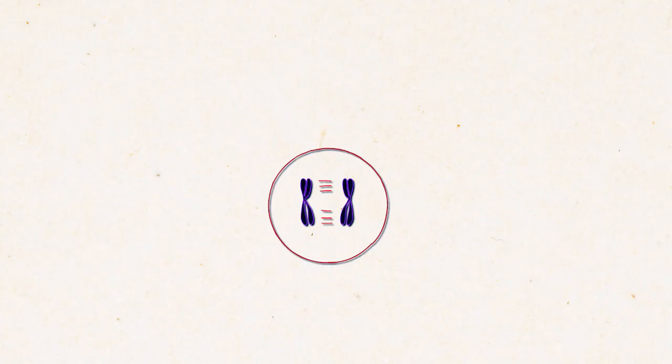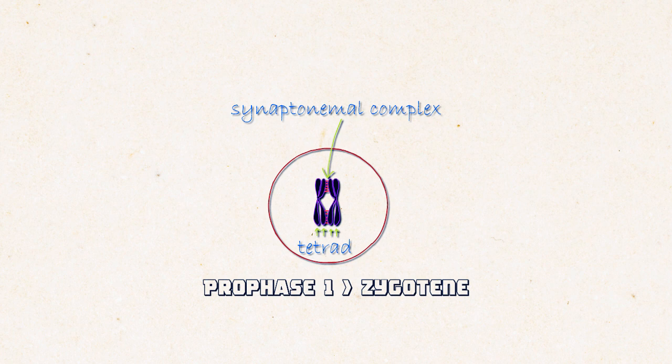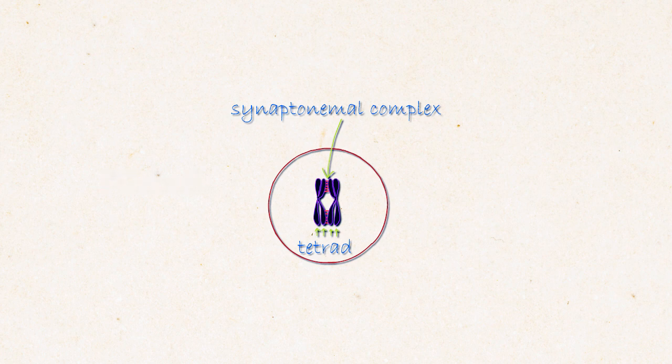In the Zygotene stage chromosomes start to pair with their homologues. This process is called synapsis and a tetrad is formed. Tetra is a Greek prefix which means four. Tetrad is formed when four chromatids come close. Pairing is achieved by a protein structure which is called synaptonemal complex. As soon as the pairing is complete, Zygotene ends.